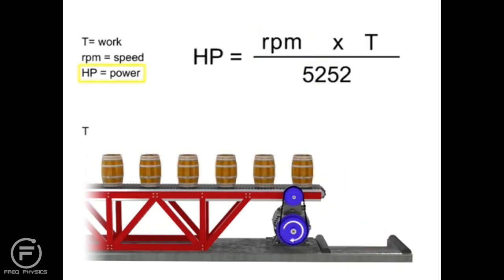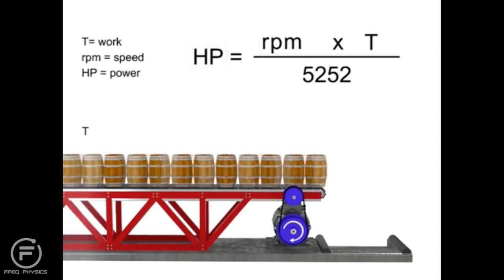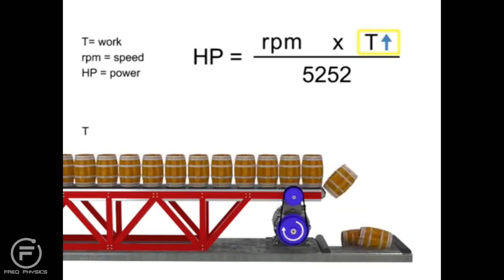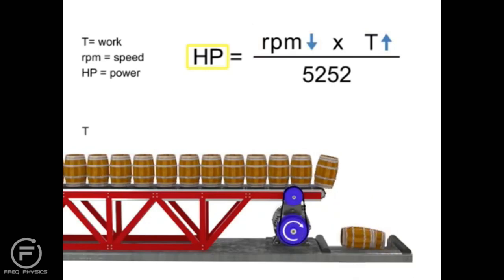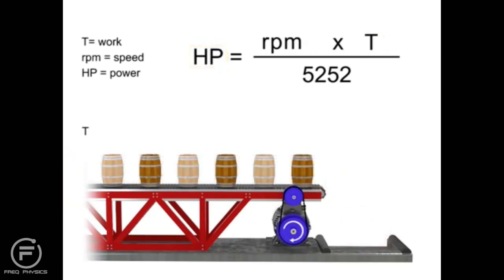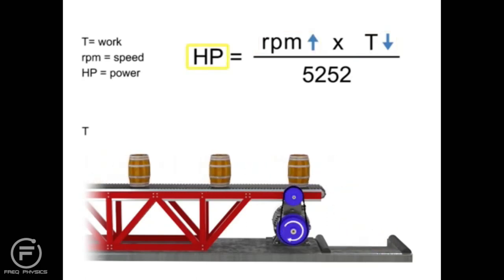If horsepower remains constant, then speed and torque are inversely proportional. As the torque increases, speed decreases to maintain constant horsepower. Let's say we want the horsepower of our motor to remain constant, but wish to increase the torque. If torque increases, the speed of the conveyor decreases so that the horsepower required of the motor remains constant. Similarly, the opposite is true: if the torque decreases, the speed of the conveyor increases and the horsepower generated by the motor remains constant.